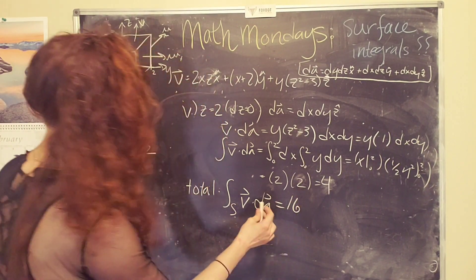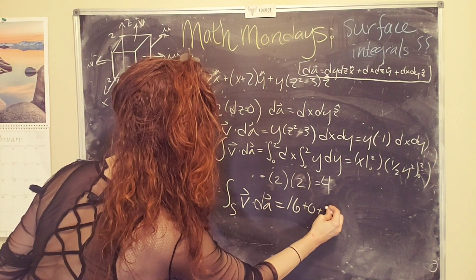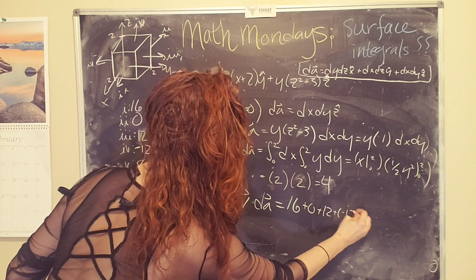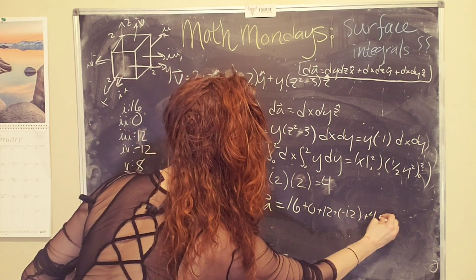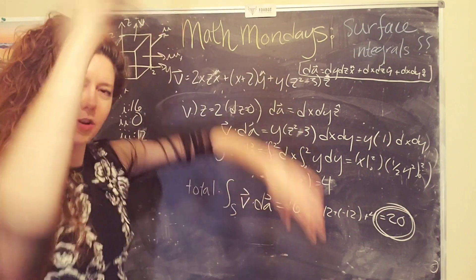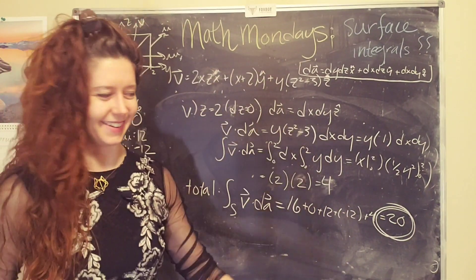So we have 16 plus zero plus 12 plus negative 12 plus four equals 20. Woo. We're done. Yeah. Okay.